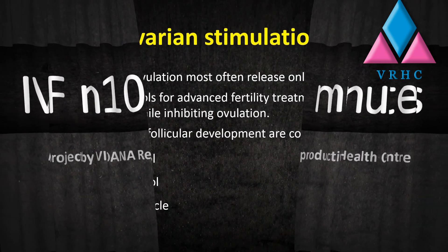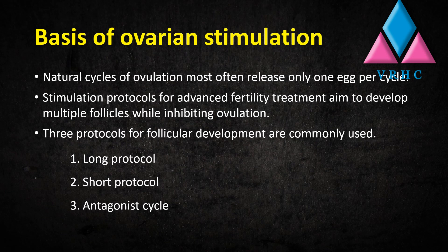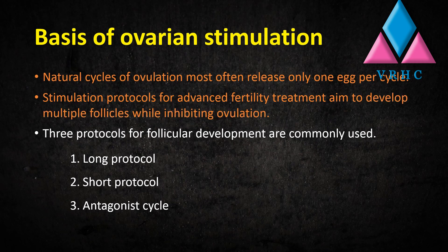Let's start with looking at the basis of ovarian stimulation. Natural cycles of ovulation most often release only one egg per cycle. Stimulation protocols for advanced fertility treatment aim to develop multiple follicles while inhibiting ovulation. Three protocols for follicular development are commonly used: the long protocol, short protocol, and antagonist cycle.